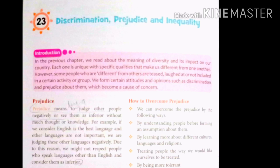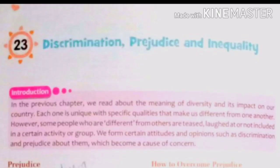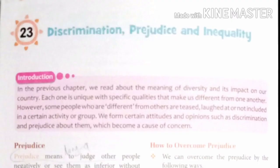Inequality exists between groups of people in society because one group has more money, advantages, or other benefits. In this chapter we will read about discrimination, prejudice and inequality. In our previous chapter we read about the meaning of diversity — anikta — and its impact on our country, and how diversity is also important for a country.